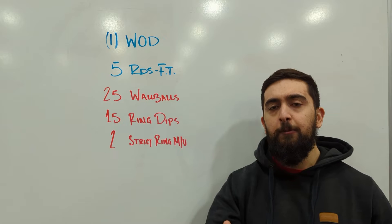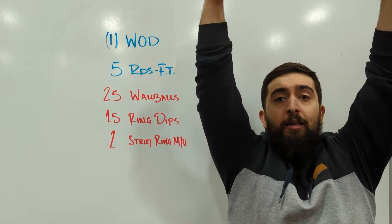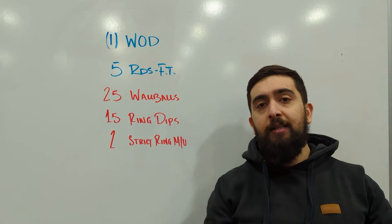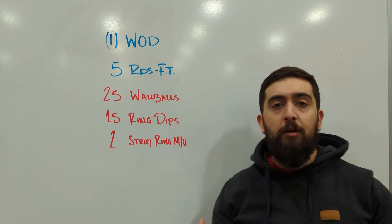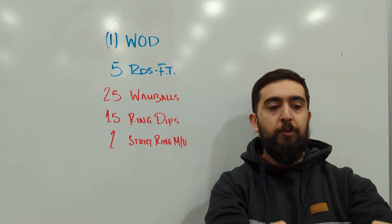So that might mean instead of doing that strict ring muscle-up, maybe you hang from the rings and in a false grip you do some pull-ups. You do two pull-ups from there. If that's not available to you, maybe you can do some horizontal ring pull-ups, but again you hold yourself in that false grip position.